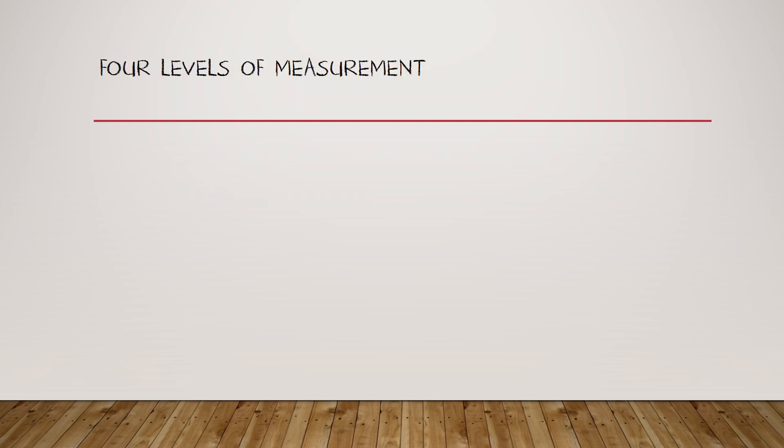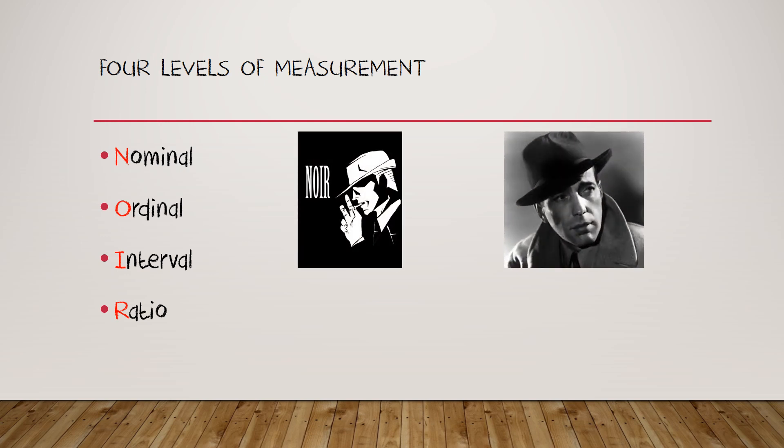The four categories I've talked about each have a name and the names commonly given to them are from lowest level to highest level: nominal, ordinal, interval, and ratio. You're going to need to know that. The easiest way to remember them and their order probably is with the mnemonic. I think about film noir, you know, the kind of movies with Humphrey Bogart. N-O-I-R gives you the four letters, levels, and in their order.